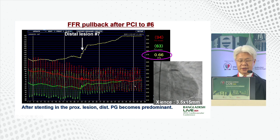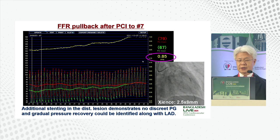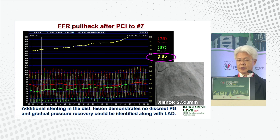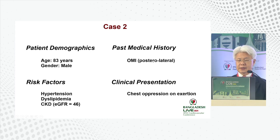After placing a stent in the proximal site, the distal pressure gradient becomes predominant and the distal FFR is 0.66 — not sufficient. We then treat the distal region with additional stenting, which demonstrates no discrete pressure gradient. Gradual pressure recovery is identified along the vessel, indicating diffuse disease that cannot be treated further. The final FFR result is 0.85.